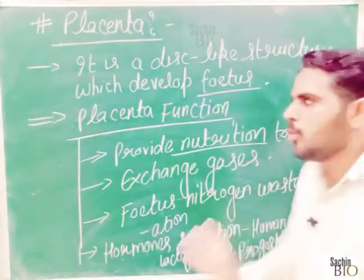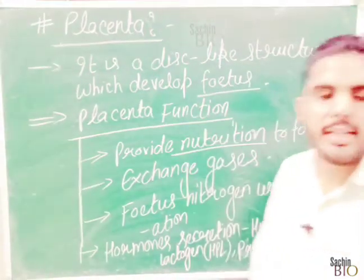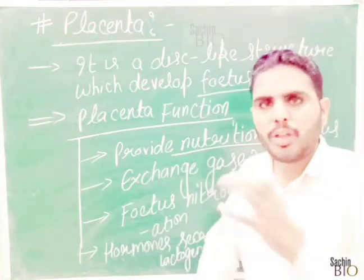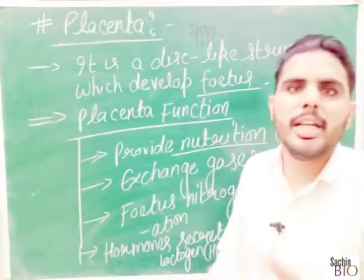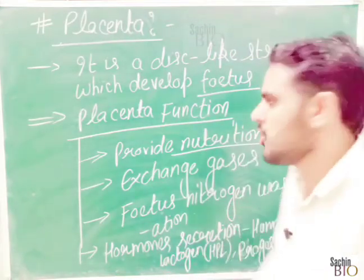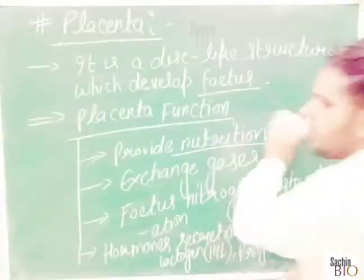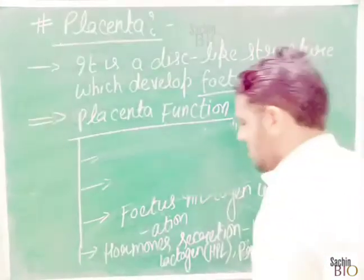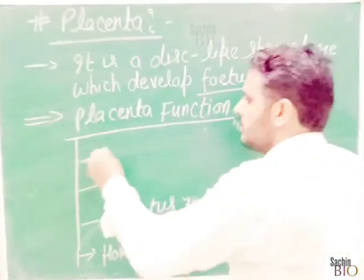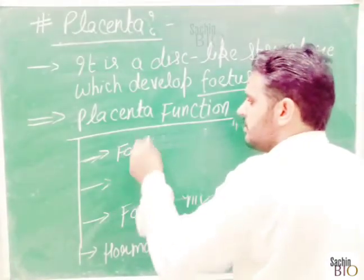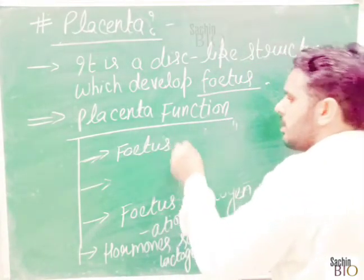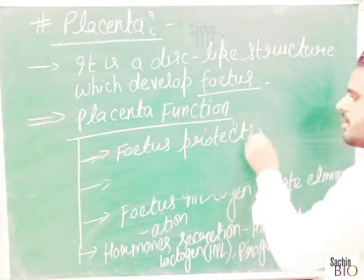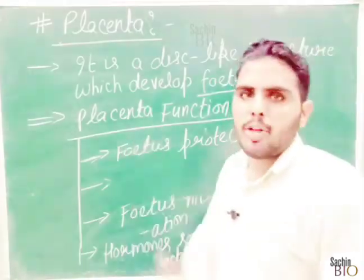So these are some hormones secreted by the placenta. Another function of the placenta is protection — it forms a layer around the baby, and its job is to protect the fetus. So the functions of placenta include protection of the fetus. That is about the placenta.